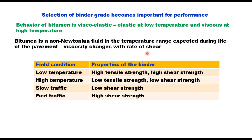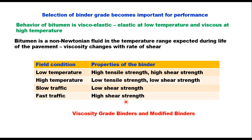This table summarizes the behavior of bitumen in different field conditions experienced by a pavement during its entire life. At low temperature, the binder has high tensile strength and high shear strength. At high temperature, the binder has low tensile strength and low shear strength. At slow traffic, tensile strength is not affected but shear strength will be low. At fast traffic, tensile strength is not affected but shear strength will be very high. There are two types of binders in road construction: normal viscosity grade binders specified as VG10, VG20, VG30, or VG40, and modified binders through polymer, crumb rubber, or natural rubber.